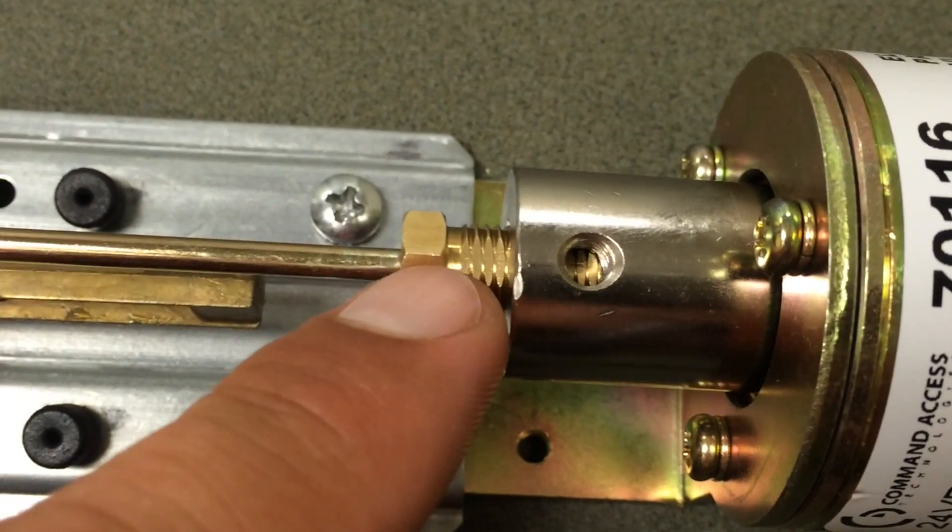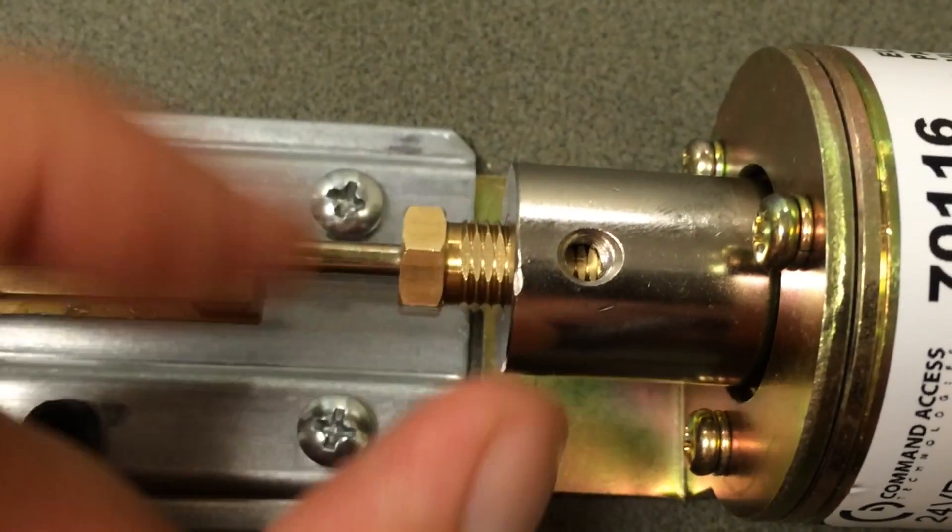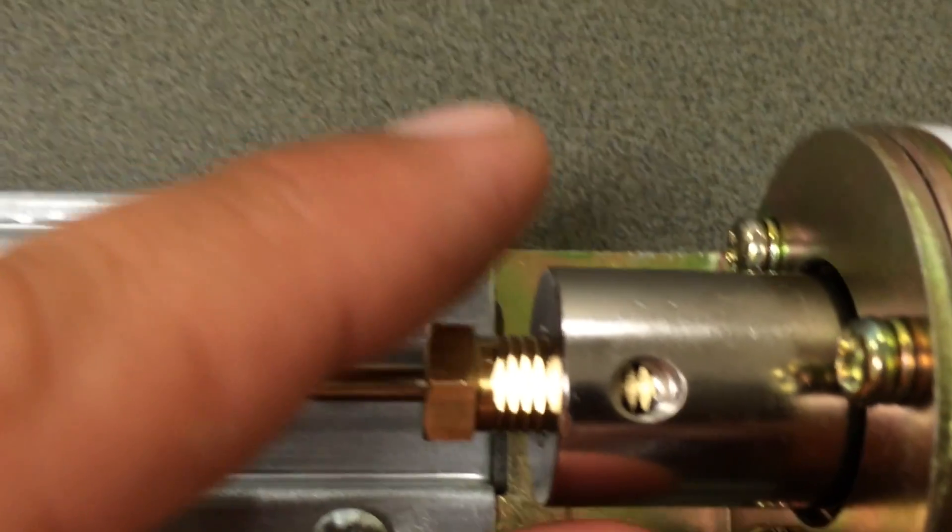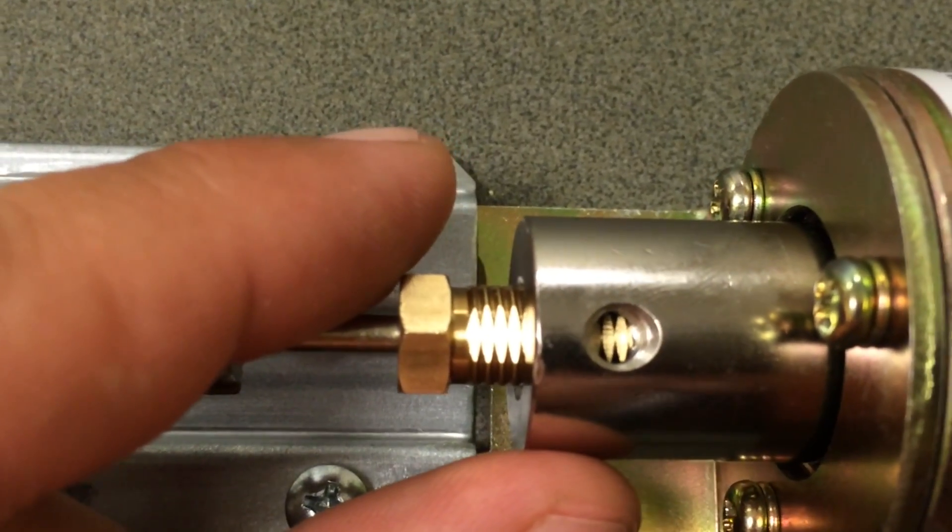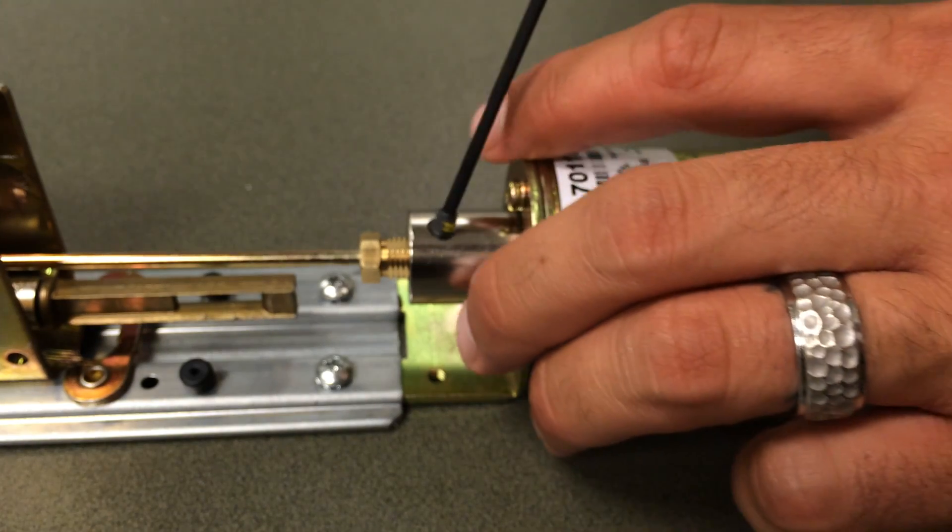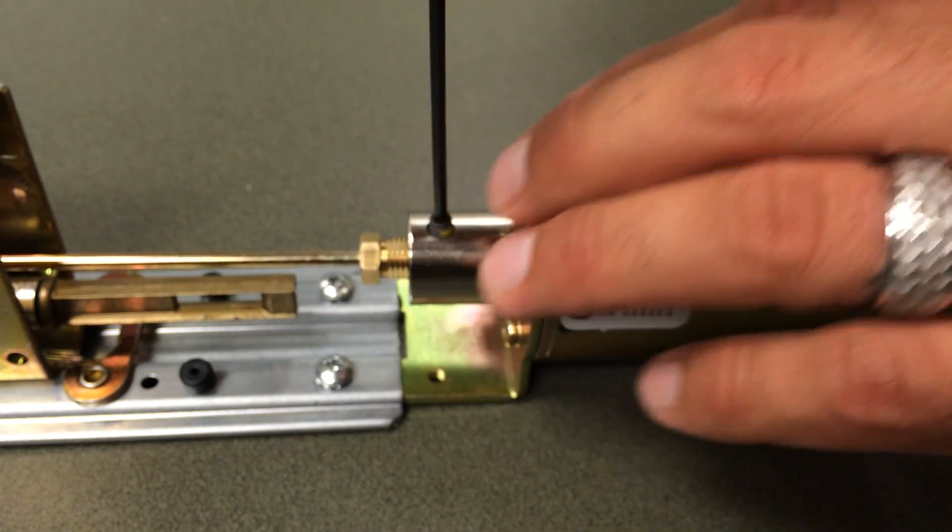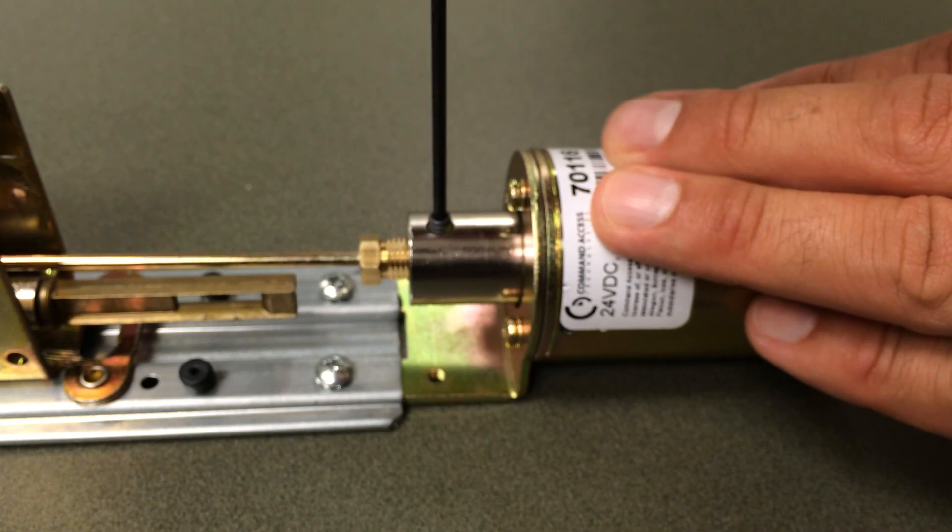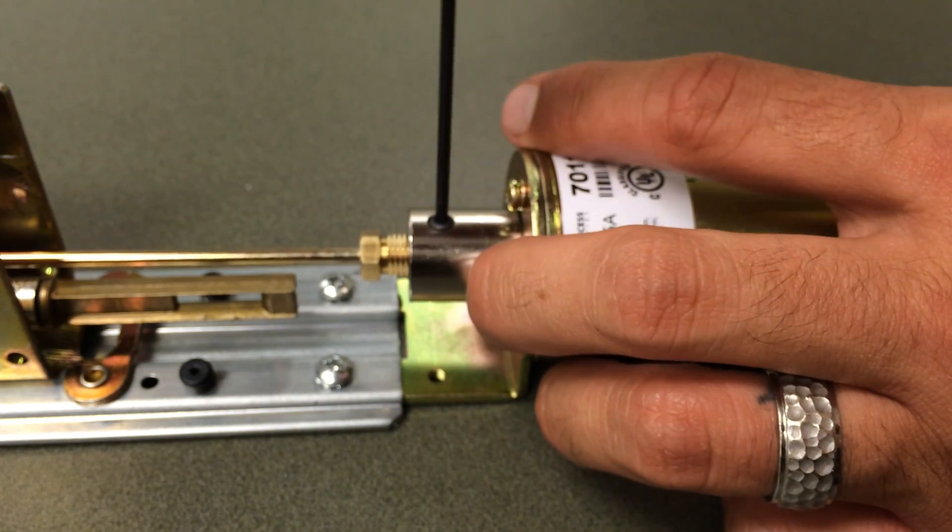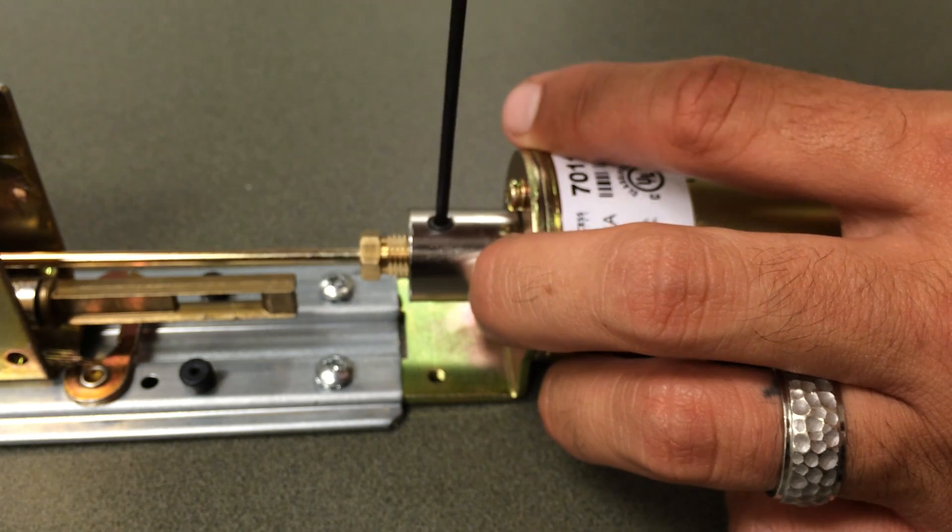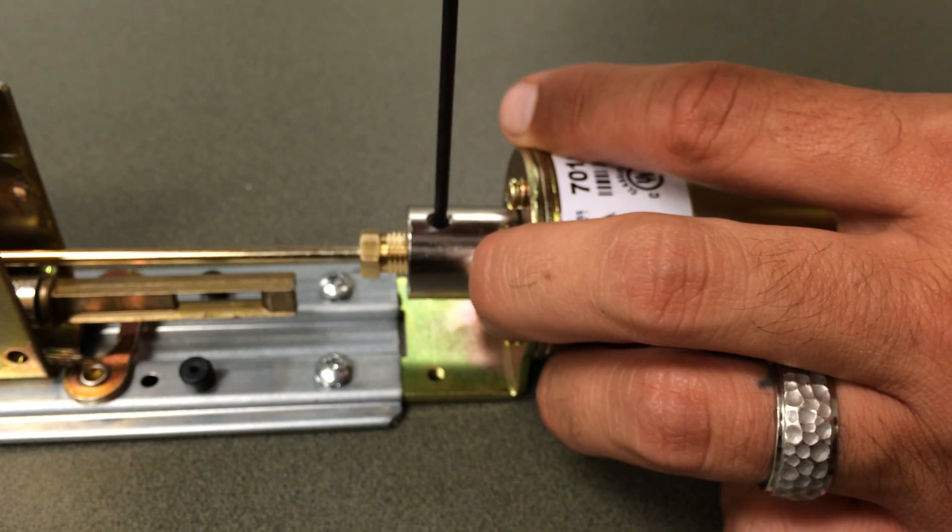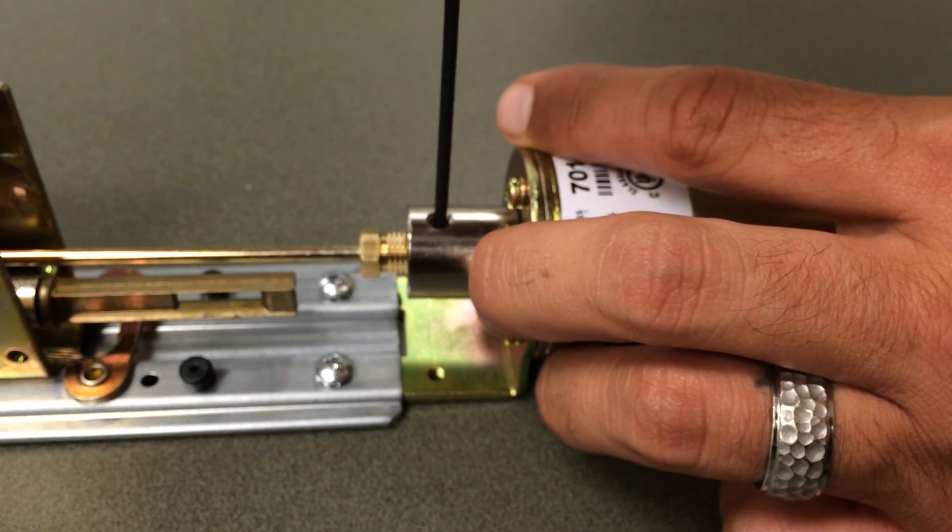Once you have your adjustment down we can go back to the plunger and grab our last hex screw. Again here we want to make sure the smooth part is facing us, not the threaded part so we don't damage the threading. We're going to screw it in just to make sure that our adjustment is secure. When we tighten it we want to make sure we don't tighten too much so that it doesn't damage the spring in there.